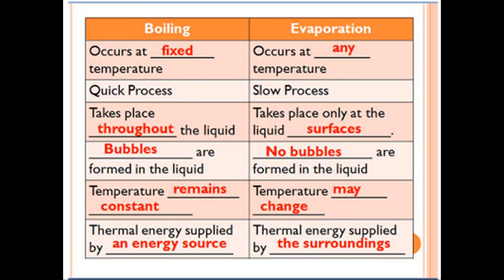Let's compare boiling and evaporation. Boiling occurs at a fixed temperature — for example, pure water at standard atmospheric pressure boils at 100 degrees Celsius — while evaporation occurs at any temperature. Boiling is a quick process; evaporation is slow. Boiling takes place throughout the liquid; evaporation takes place only at the surface. In boiling, bubbles are formed; in evaporation, no bubbles form. In boiling, temperature remains constant; in evaporation, the temperature lowers — remember, evaporation is a cooling process. For boiling, thermal energy is supplied by an energy source such as a flame; in evaporation, thermal energy is supplied by the surroundings.